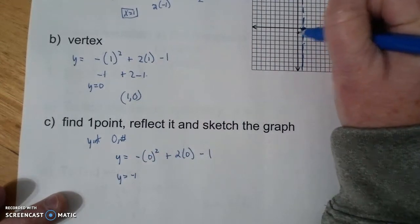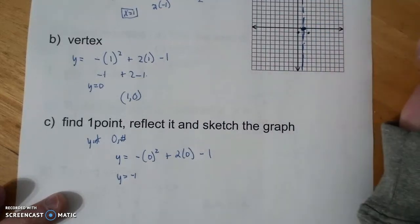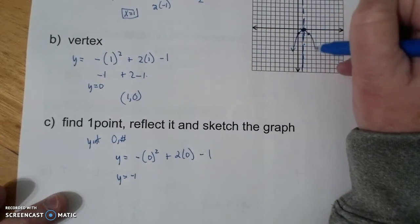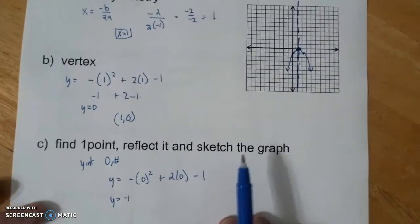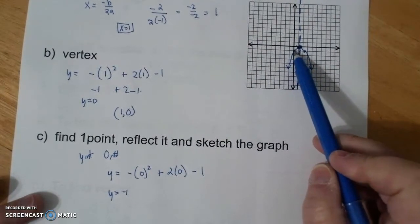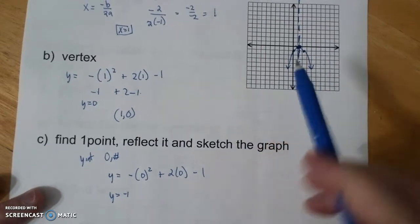So I have a point right here and right here because this is 1 off and this is 1 off. And so there's the axis of symmetry. Because the axis of symmetry says, however far you are from the axis of symmetry, you're also that far on the other side.